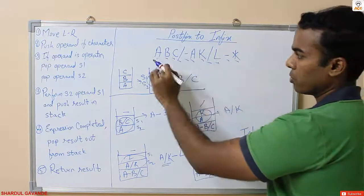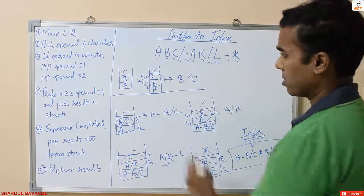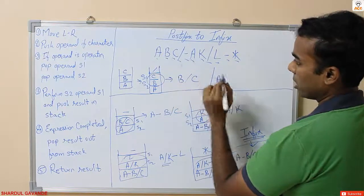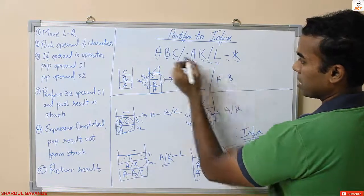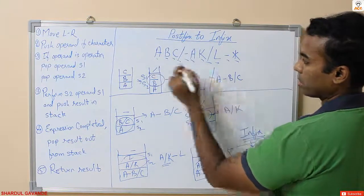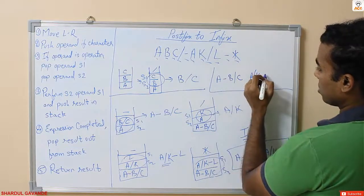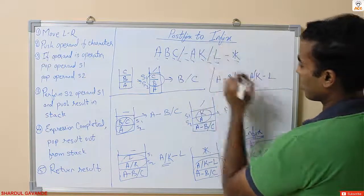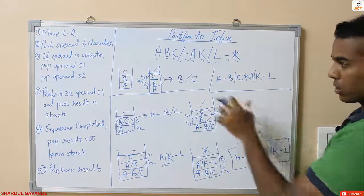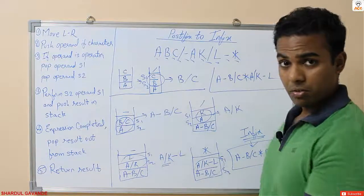You can also do this directly without the stack — in infix the operator should be between the operands. So for a, b, c with division you get b/c; with minus you get a minus b/c; then a divided by k; then l with minus gives a/k minus l; and multiplication comes between the two terms. However, if the expression is large enough you need the stack, and in examinations you have to show steps which carry marks.